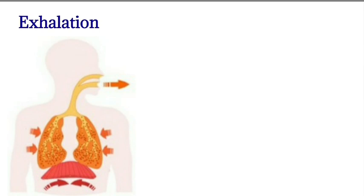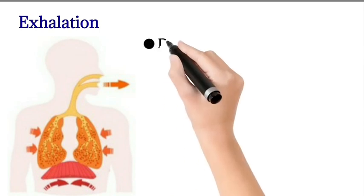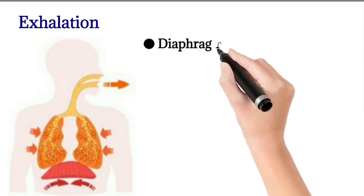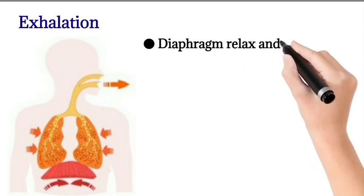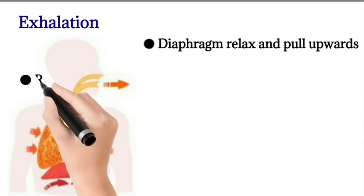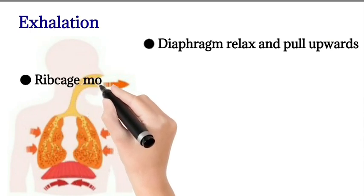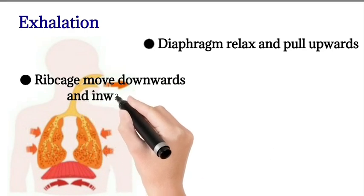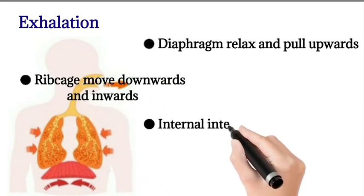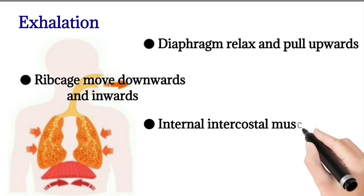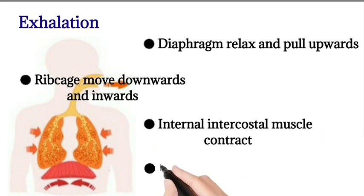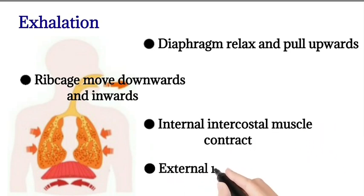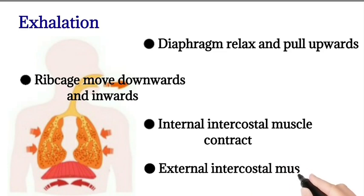Next we move on to exhalation — what happens when you breathe out. See the picture. The diaphragm muscle relaxes and pulls upwards. The ribcage moves downwards and inwards. The internal intercostal muscles contract and the external intercostal muscles relax.